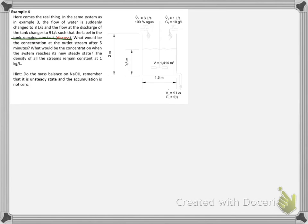Let's discuss this one. We have here 8 liters per second of water, equivalent to 8 kilograms per second. Here we have 1 liter per second of sodium hydroxide solution, equivalent to 1 kilogram per second. At the outlet, we have 9 liters per second, equivalent to 9 kilograms per second.